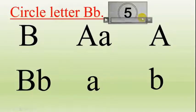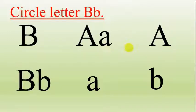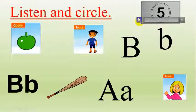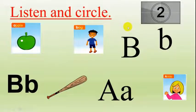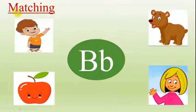Circle letter B — are you ready? I think it's very easy. Well done! Listen and circle. B, B, B, B — are you ready? Well done! Matching — you match the correct picture with the word.